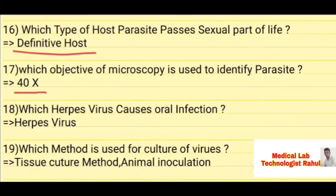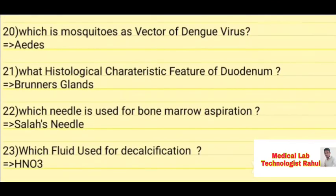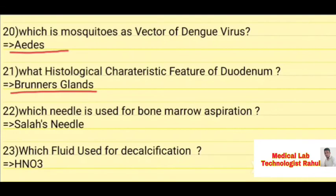Herpes simplex virus causes oral infection. Tissue culture method and animal inoculation are used for culture of virus. The mosquito vector of dengue virus is Aedes aegypti. Histological characteristics of duodenum include villi and crypts.